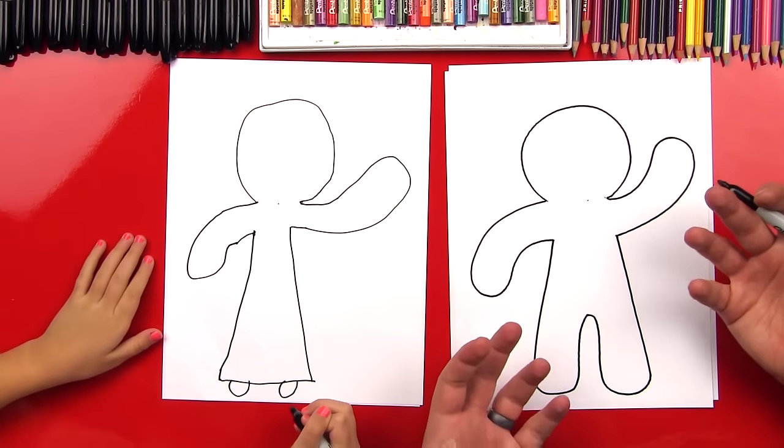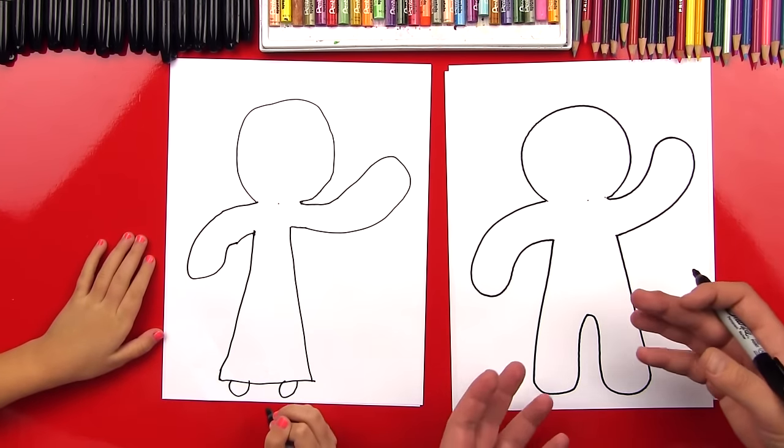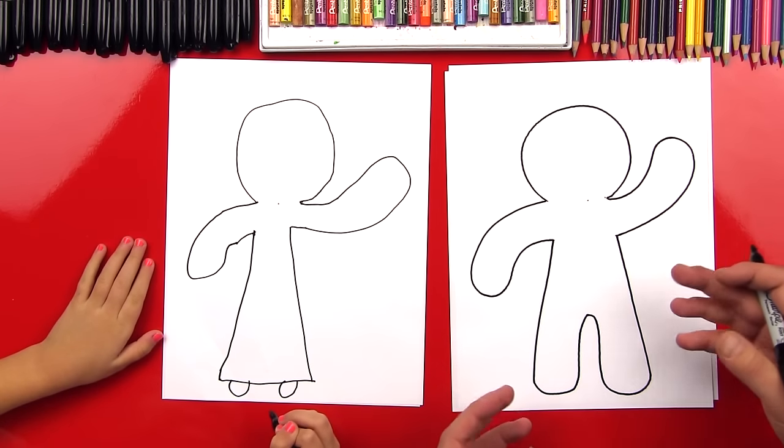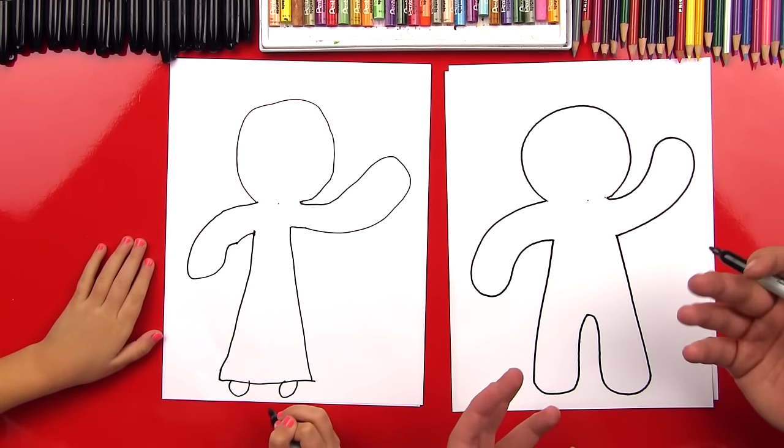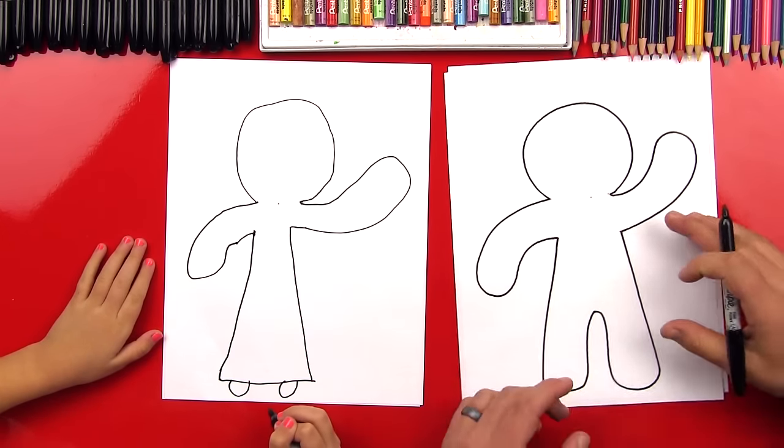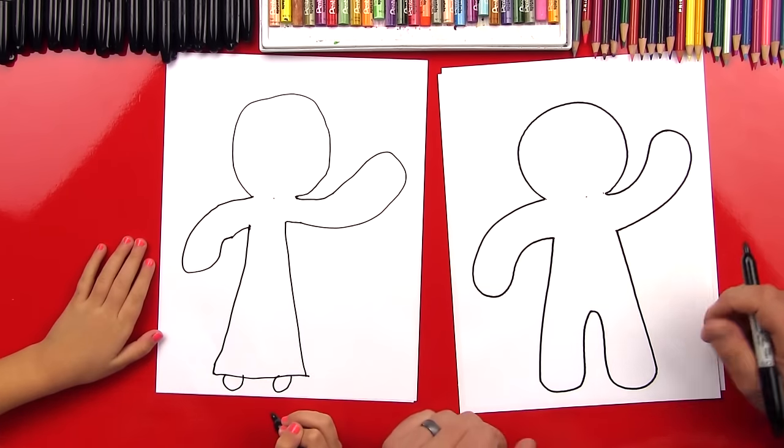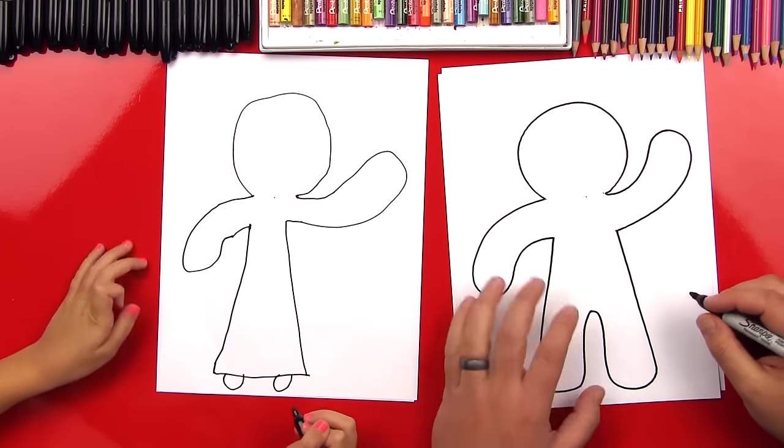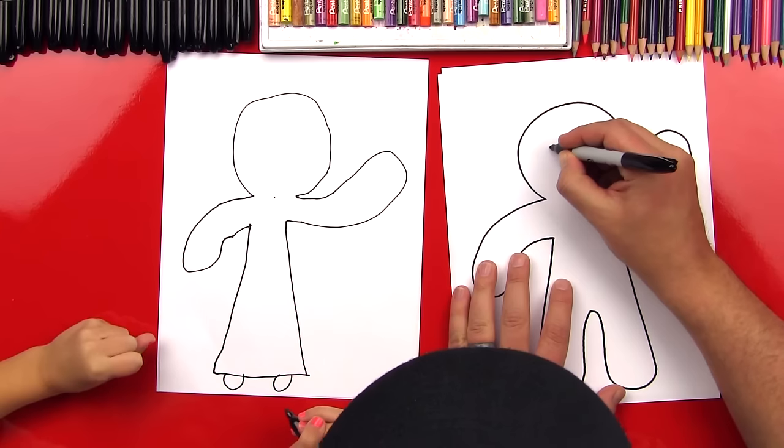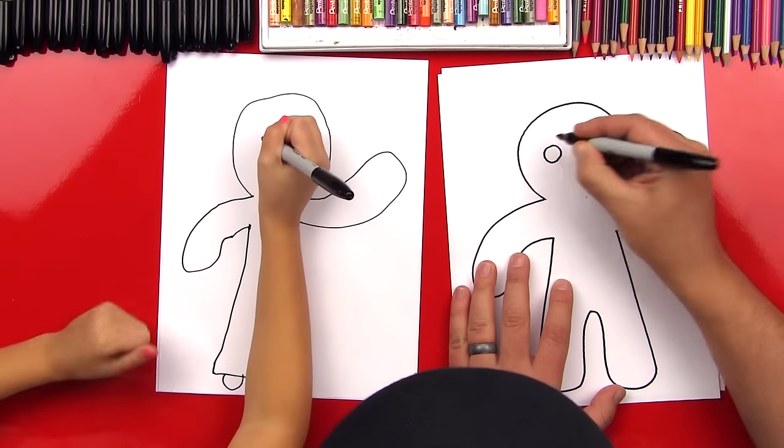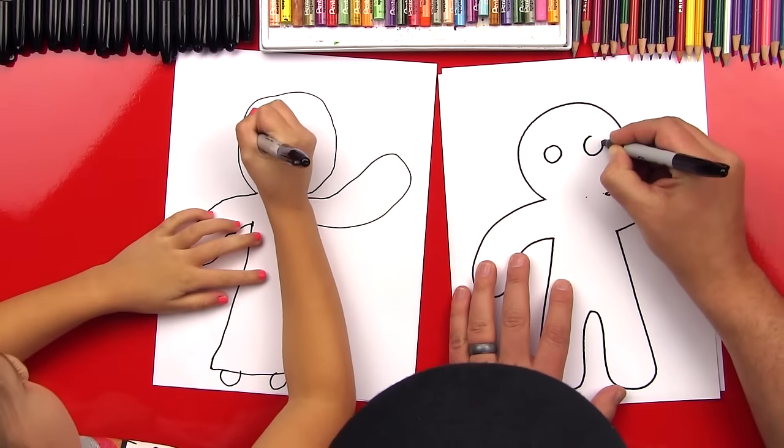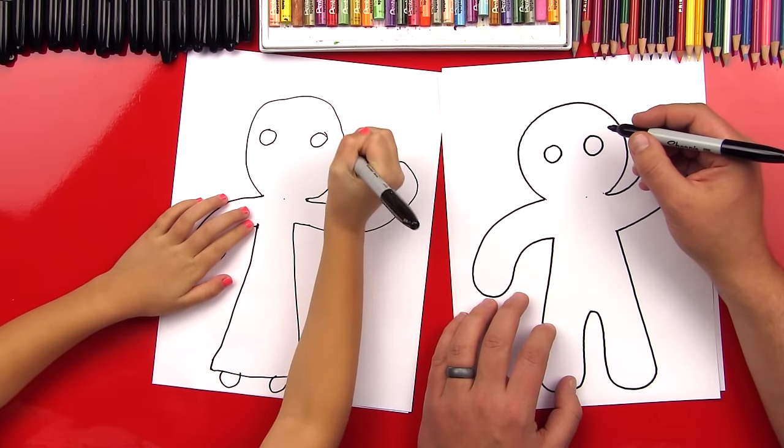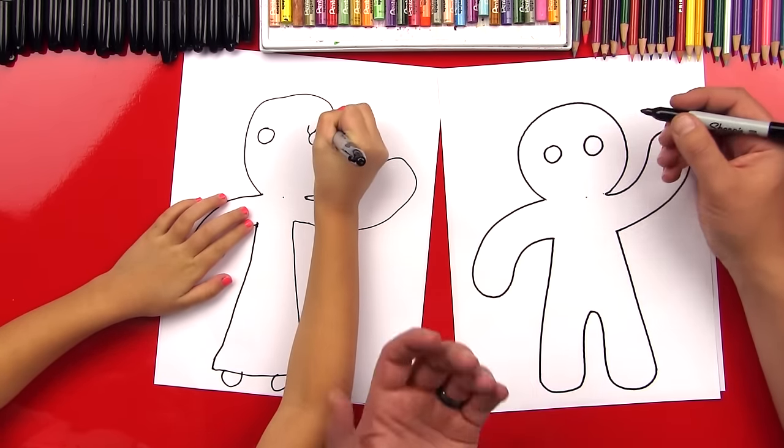Now we're done with our gingerbread people, but we need to decorate them. So this part's the cool part because our art friends at home, they could stop the video and they could decorate their gingerbread man or girl any way they want to. But let's keep going, we're gonna decorate it our way. Alright, so first let's do the eyes. We're gonna do two big circles like this. Yes, good job. Oh and eyelashes.